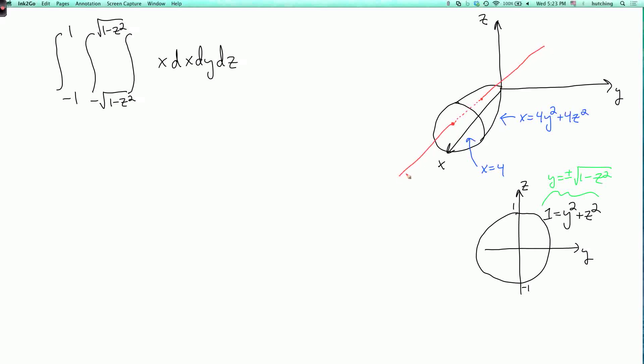And it's only the part of, so this is a line where y and z are fixed, and only the part of this line that's inside the region is what we need to integrate over. So, where does this line enter and exit the region? Well, here, this equation of the surface is x equals 4y squared plus 4z squared. So, the lower limit of x is 4y squared plus 4z squared. And the upper limit of x is the other place where the line hits the boundary of the region at x equals 4. So, we have to integrate x from 4y squared plus 4z squared to 4.